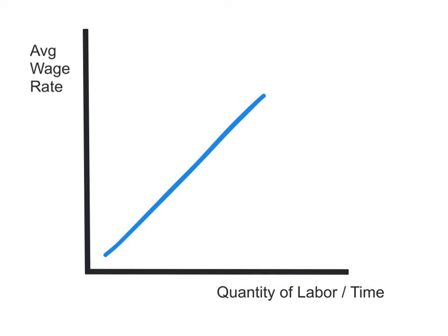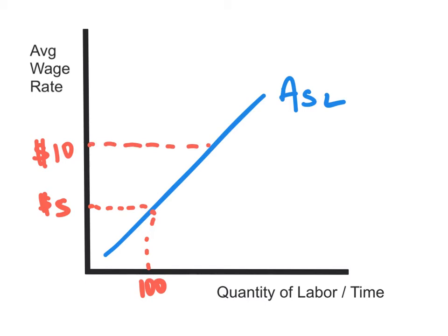Let's take a look at the aggregate supply of labor. Just like our supply curve, the aggregate supply of labor is going to slope upwards. That means if I raise the wage rate, we should get more people working. At a wage of $5 an hour, we might have 100 people working. And if the average wage rate is $10 an hour, we should expect more people — maybe 200 people — to work. So what this aggregate supply of labor curve is telling us is that as wages rise, more people will supply their labor on the market. It's intuitive, and very similar to simple supply we looked at in microeconomics.